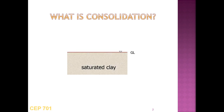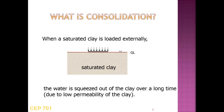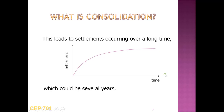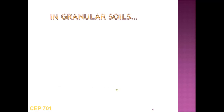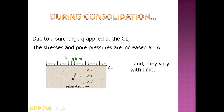Consolidation occurs when a soil is loaded externally and water gets expelled. In clay soils, this takes a long time due to low permeability, leading to settlement occurring over a long period — initially rapid, then slowing over several years. In granular soils, drainage is free and settlement is instantaneous.